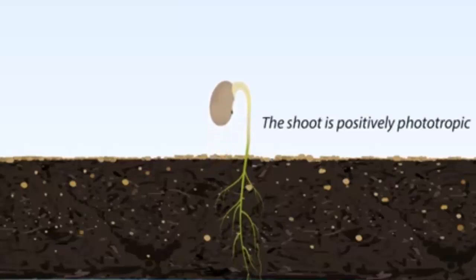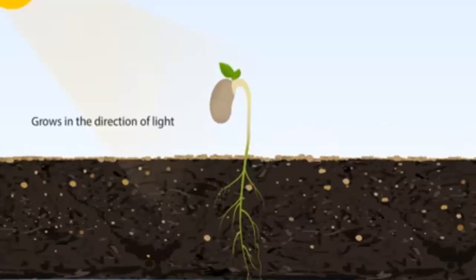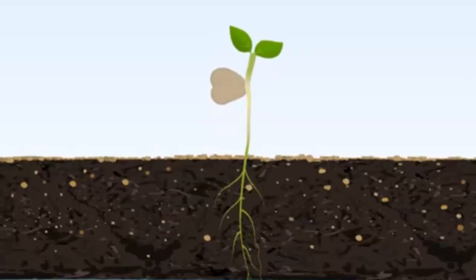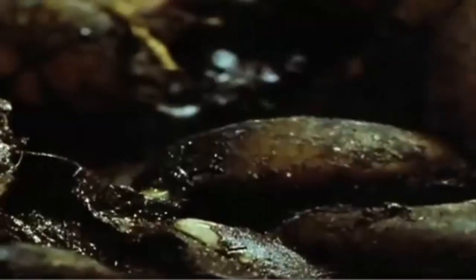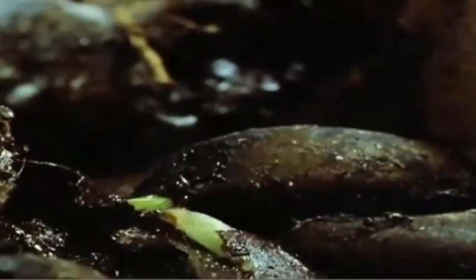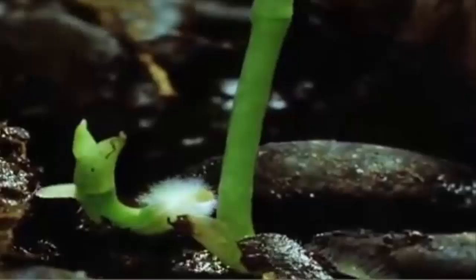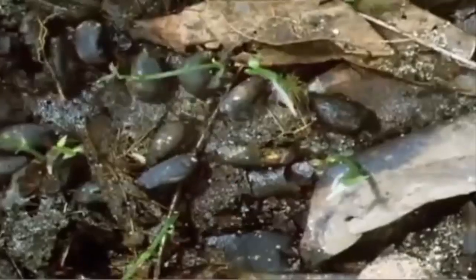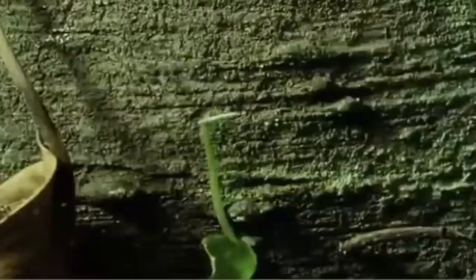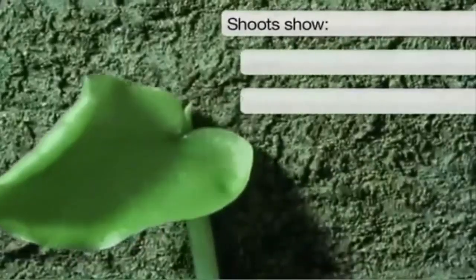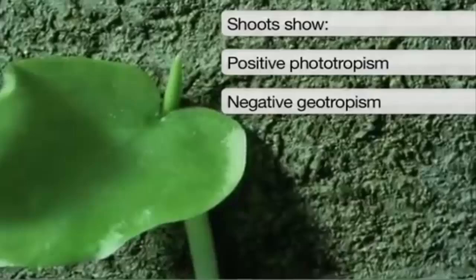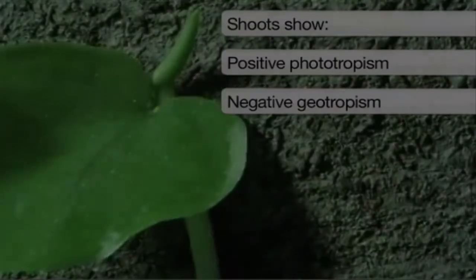The shoot is positively phototropic and so it grows in the direction of light. The shoot shows positive phototropism but negative geotropism.